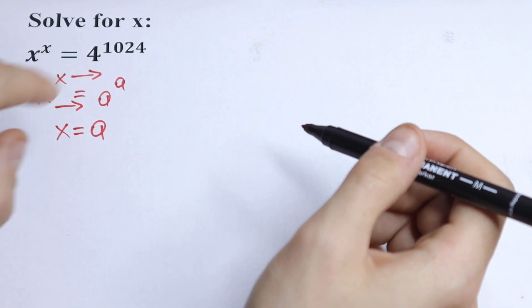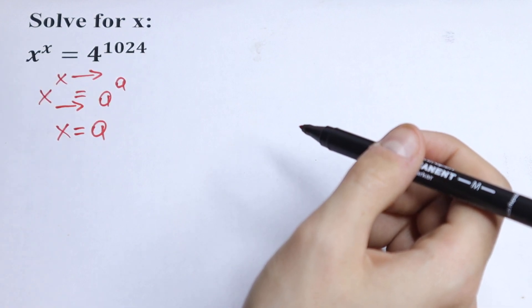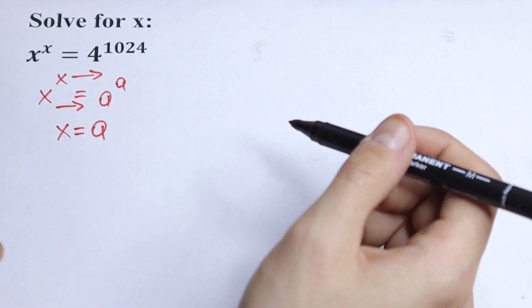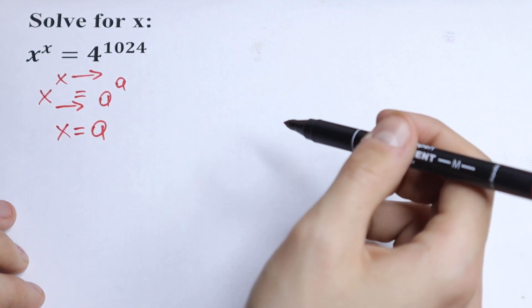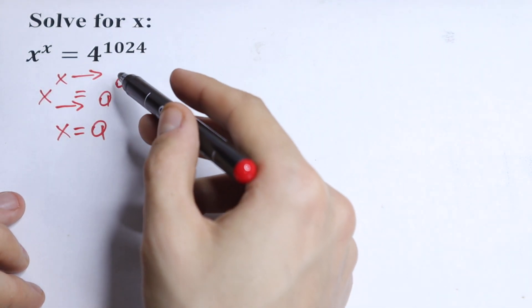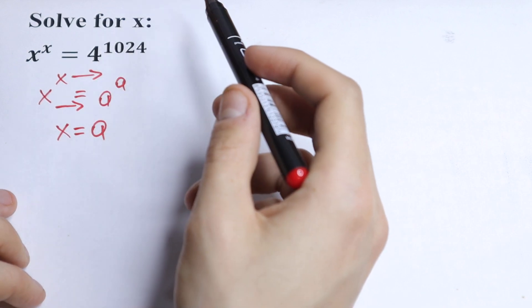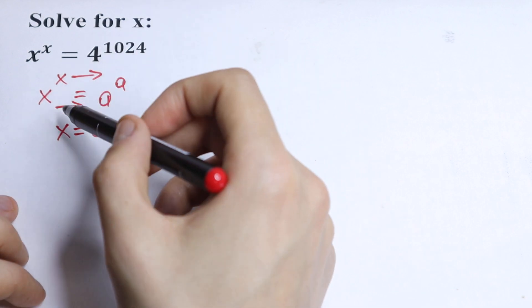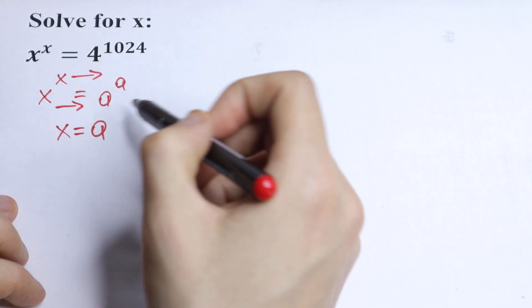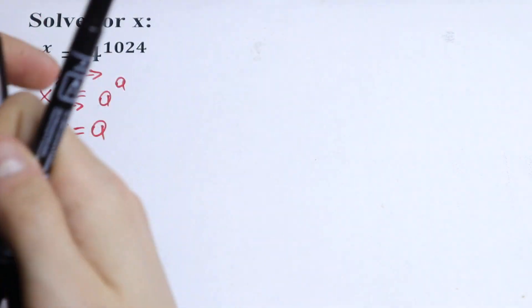So let's try to simplify the right side. If we are able to simplify it in such a way that the base equals the exponent, we can write our root right here.